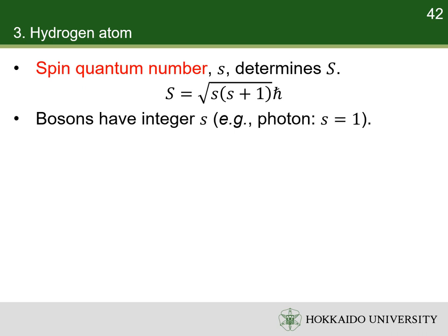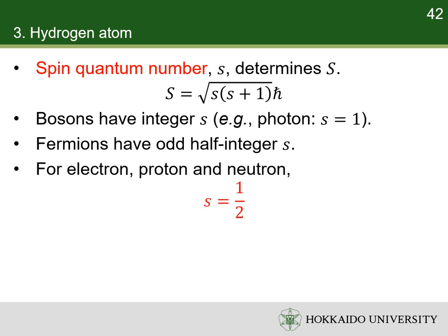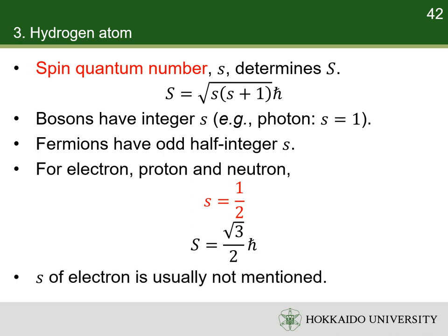Bosons are quantum particles whose spin quantum numbers have integer values. For example, photons are bosons whose spin quantum number is 1. Fermions are quantum particles whose spin quantum numbers have odd half-integer values. For example, electrons, protons, and neutrons are fermions whose spin quantum number is one-half. Accordingly, the magnitudes of the spin angular momentum of all electrons are the same. Since spin quantum number is a fixed property of all electrons, it does not affect the states of electrons and is usually not mentioned.